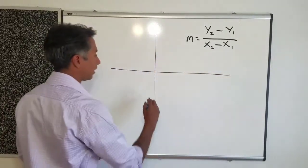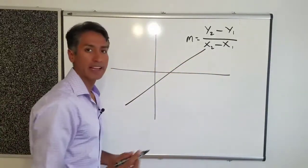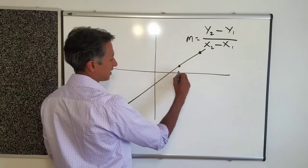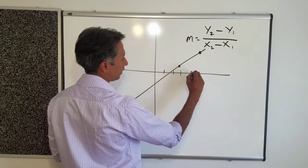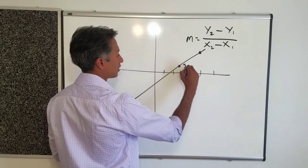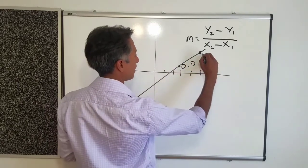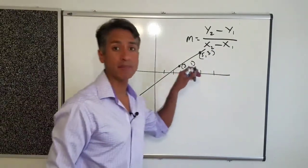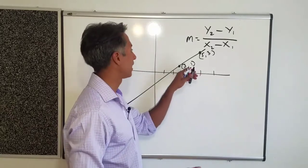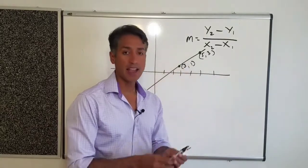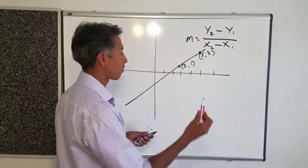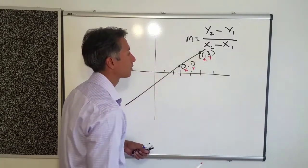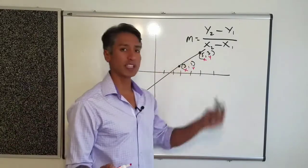Let me draw a coordinate plane here and a line. I'll label some points — let's say this is (2,3), this is (3,1), and this is (5,3). I'm just picking points, nothing complicated yet. We have two points here — these are ordered pairs. They're in order, so we have the x-value and the y-value for each.